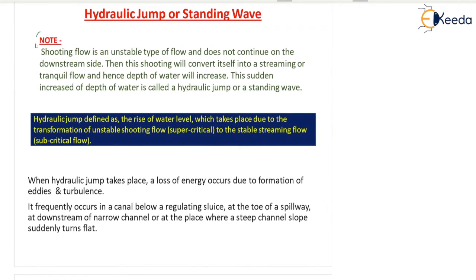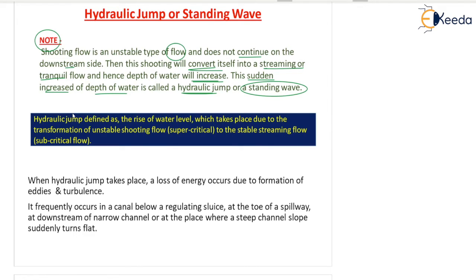Why does the jump take place? Shooting flow is an unstable type of flow and does not continue on the downstream side. This shooting flow will convert itself into a streaming flow, also known as tranquil flow, and hence the depth of water will increase. In order to gain stability, the depth of water suddenly increases, and this sudden increase in depth of water is called hydraulic jump. So because of the instability in the flow, it tries to gain depth of flow within a short length.